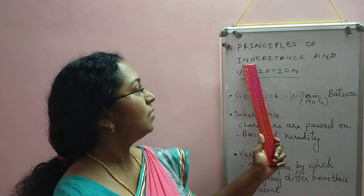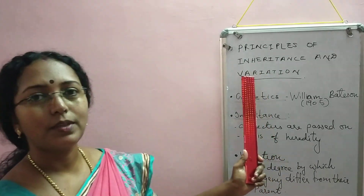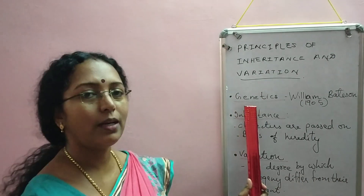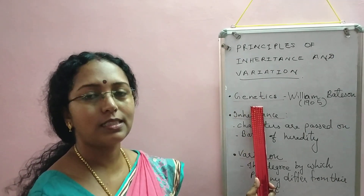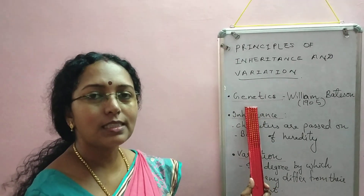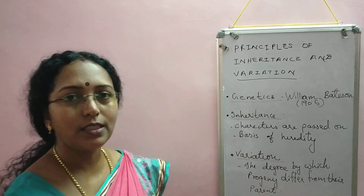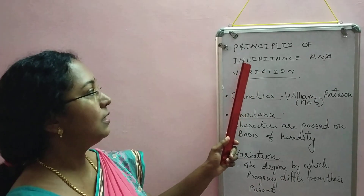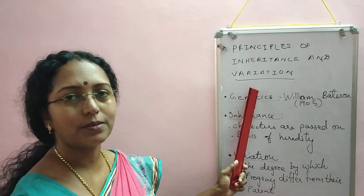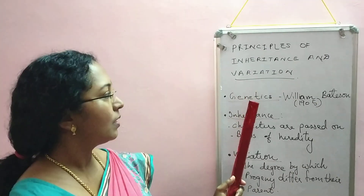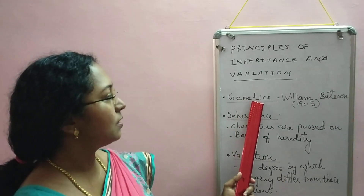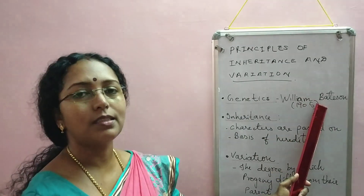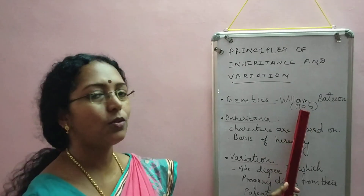Inheritance and variation come under the branch of biology called genetics. Genetics is a branch of biology which deals with two aspects: inheritance and variation. The term genetics was coined by William Bateson in the year 1905.